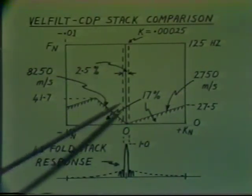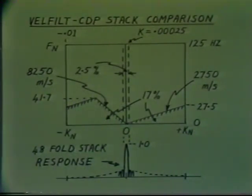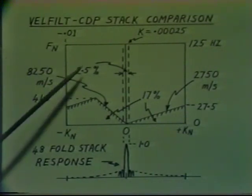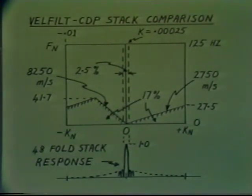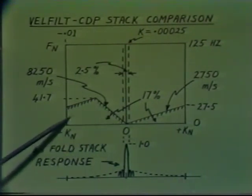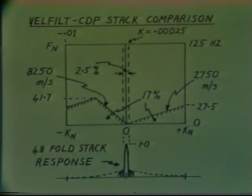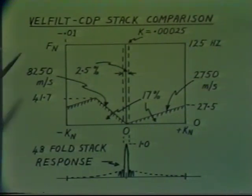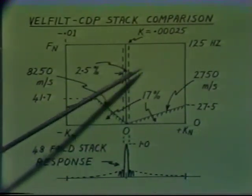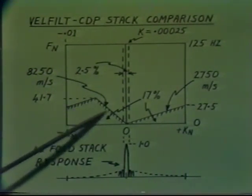That narrow central strip amounts to only 2.5% of the total FK plane, meaning some 97.5% of non-coherent noise spread over the whole FK plane is attenuated by the stacking process. One other difference between velocity filter and stack attenuation of random noise is that the stack doesn't give complete attenuation because of its side lobes — it's only a partial attenuation — whereas the velocity filter reject zones are zones of total rejection. However, the stacking process generally attenuates a greater area of the FK plane than does a typical velocity filter.